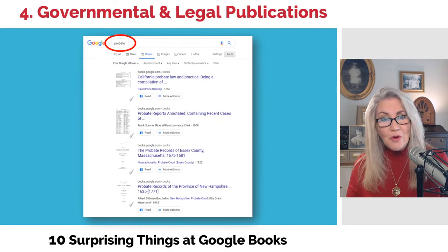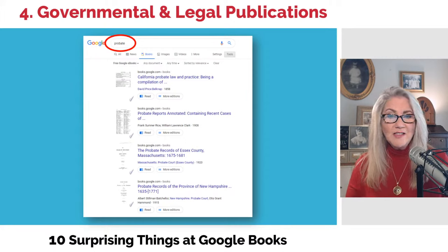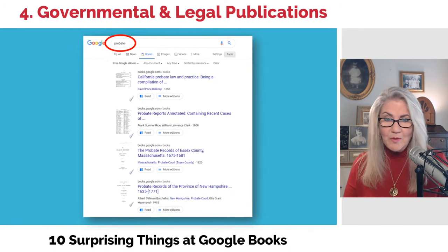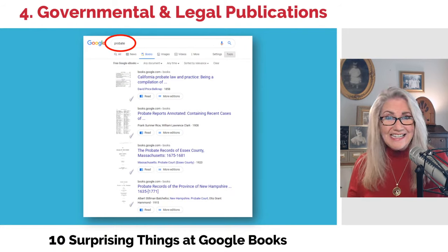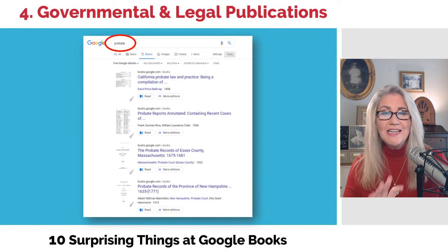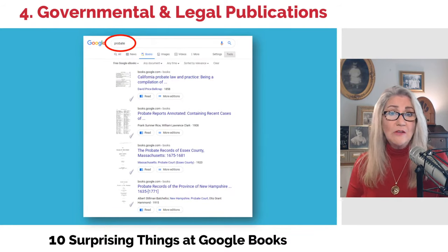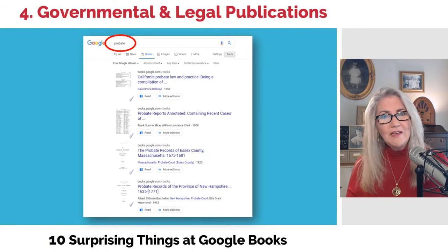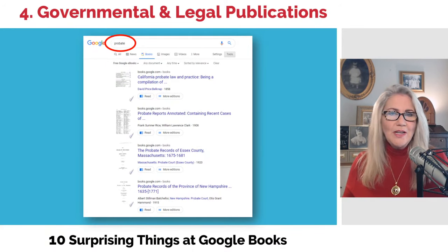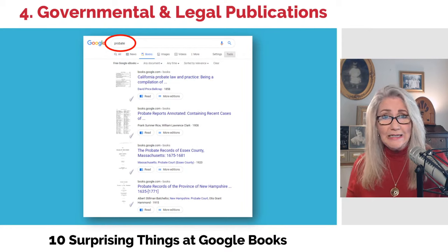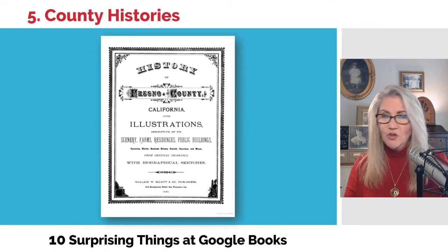There were lots of legal publications, and I realized I could search for probate. If you do a search on "probate" in Google Books, you're going to find lots of items. Start mixing in names, counties, and locations. Here we've got the probate records of Essex County, Massachusetts from 1675 to 1681 — fantastic. It's here, it's free, it's been digitized, it's readable right here and probably downloadable. At some point it seems like everybody has some kind of interaction, even if it's just paying taxes or dying — and Google Books is certainly one place to look for those legal-type records.